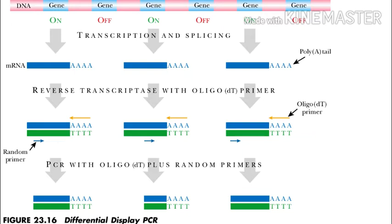This technique is a combination of RAPD with RT-PCR and has one clever modification of its own: the use of oligodT primers. Since almost all eukaryotic mRNA molecules have a 3' tail of polyA, an artificial primer made only of dT will be specific to this tail.